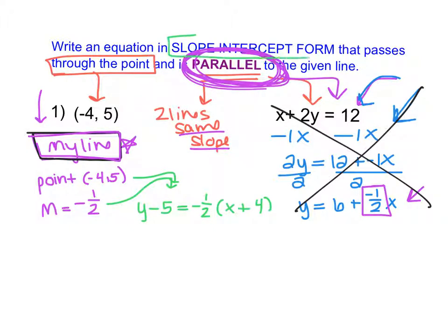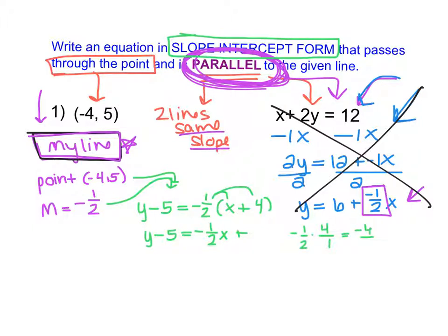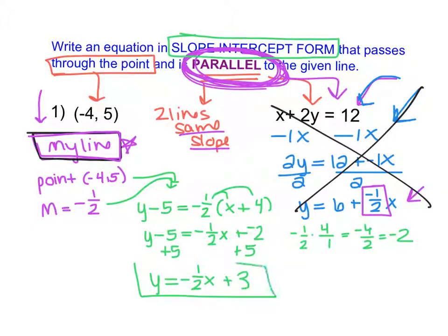The instructions ask me to end in slope-intercept form, so I use the distributive property. I have y minus 5 equals negative one-half x plus 4 over 1 times negative one-half, which gives negative 4 over 2, or negative 2. So I have y minus 5 equals negative one-half x plus negative 2. Then I add 5 to each side and get y equals negative one-half x plus 3. This is the equation of a line through the given point that is parallel to the given line.